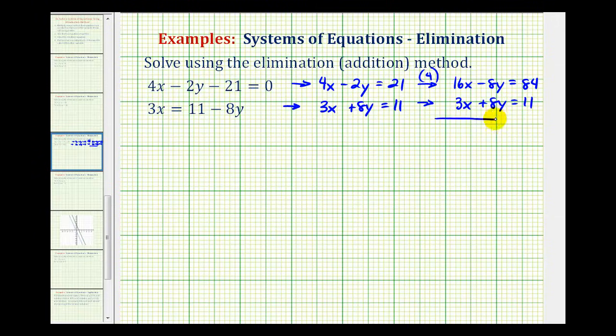And now we'll add these two equations together. Notice we'll have 19x minus 8y plus 8y, that would sum to zero. And then we have 84 plus 11, that would be 95.